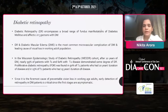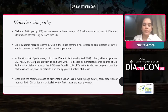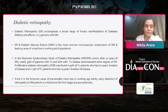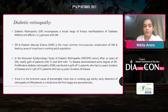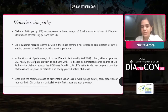Diabetic retinopathy encompasses a broad range of fundus manifestations in diabetes mellitus patients, and it affects one in three patients with diabetes. It is the most common microvascular complication of diabetes mellitus leading to visual loss in the working adult population. In the Wisconsin Epidemiological Study of Diabetic Retinopathy cohort, after 20 years of diabetes mellitus, nearly 99% of type 1 diabetic and 60% with type 2 disease demonstrated some degree of DR. Proliferative diabetic retinopathy (PDR) was found in 50% of type 1 patients with 20 years duration of disease and 25% of type 2 patients with 25 years duration.